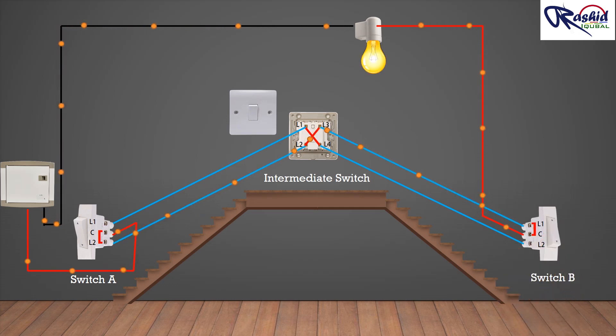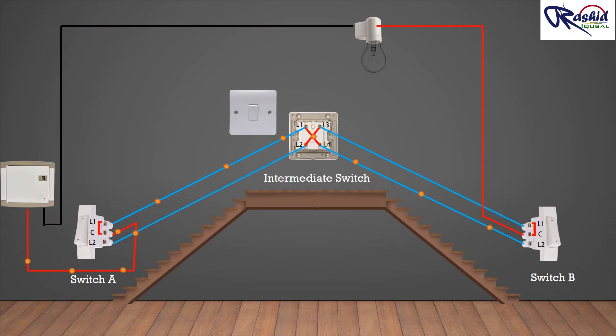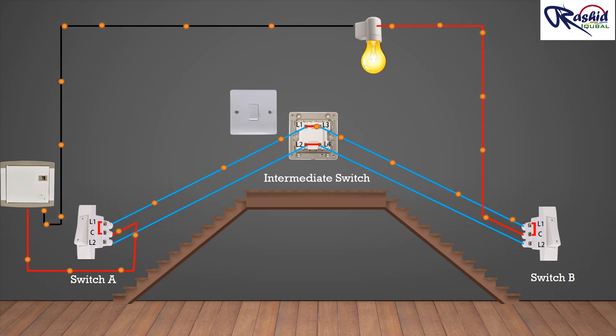If we flip switch A, we break the circuit and the light turns off. If we flip the intermediate switch again, the circuit completes and the light turns on.